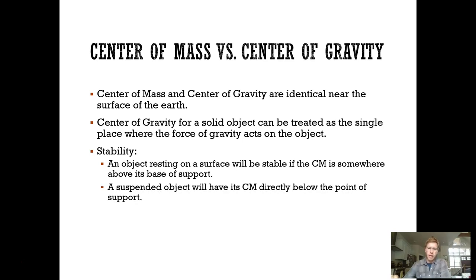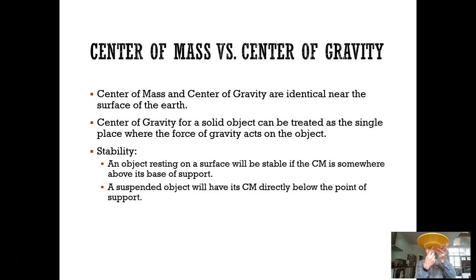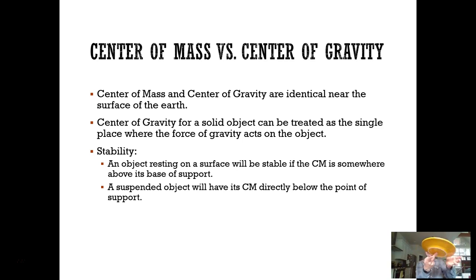Center of mass and center of gravity help you describe an object's motion and understand how to balance it. An object will always be balanced if its base of support — the point at which it's being supported — is under the center of mass. Like here with a plate: if I put my finger under the center of mass just right, I can actually balance it on that single point. If I'm off at all, it won't balance quite right.